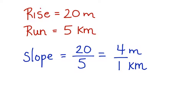which means that for every 4 meters, there is 1 kilometer. This is the slope of the hill. Let's look at another one.